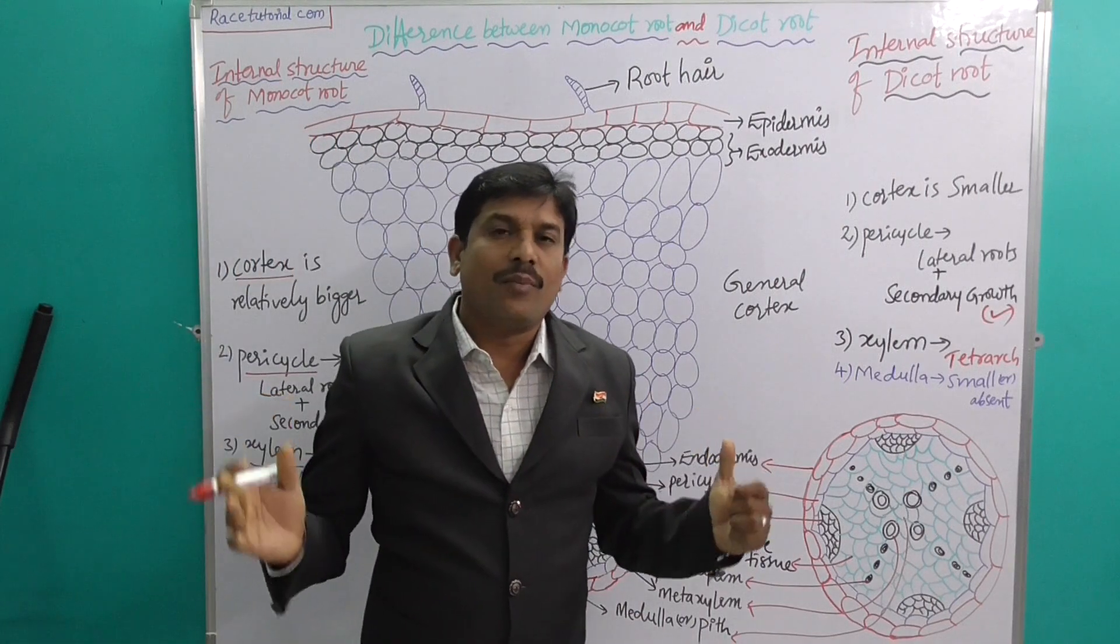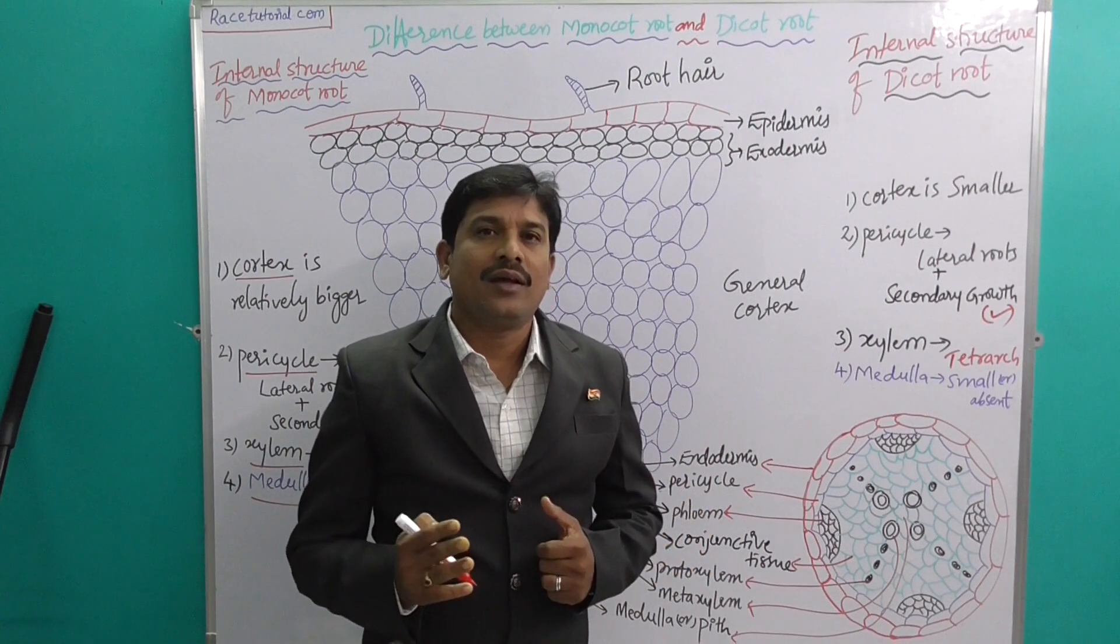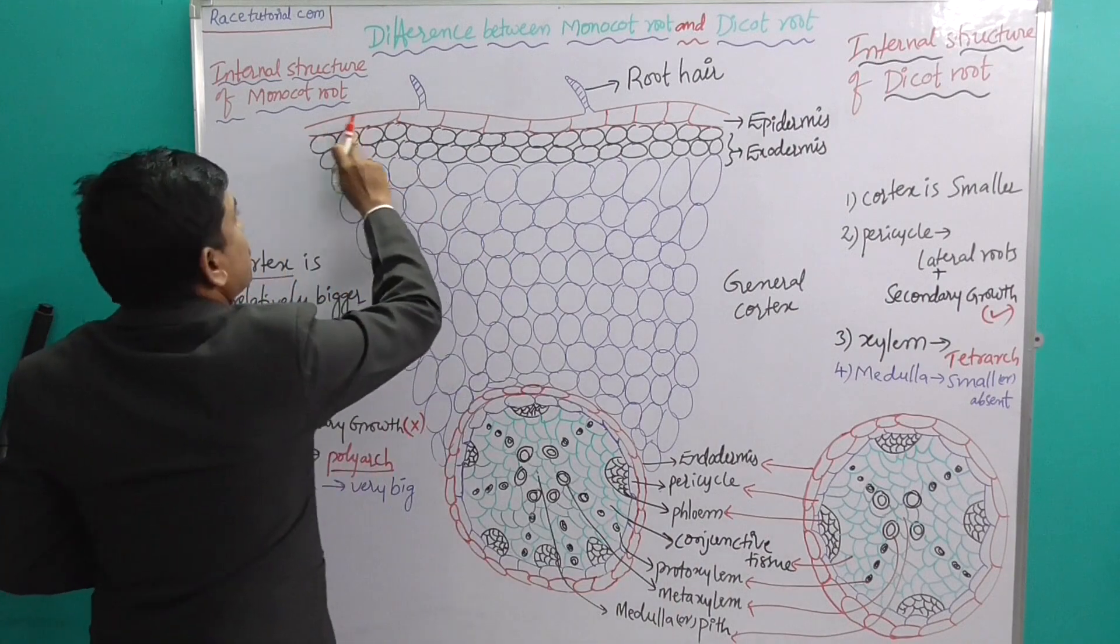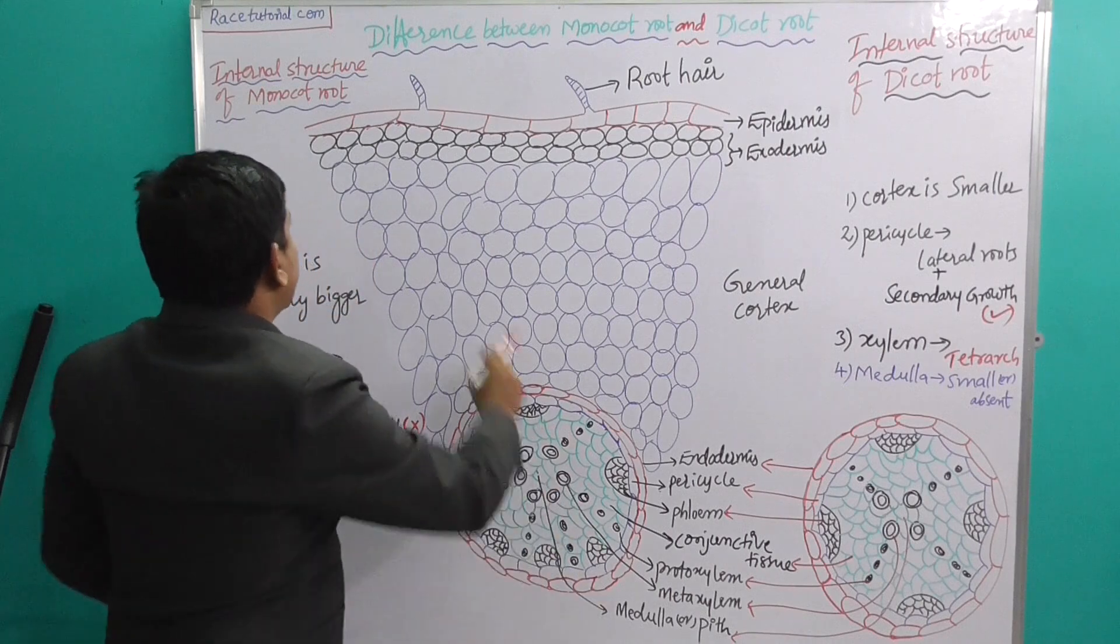In both, there are three parts: epidermis, cortex, and stele. The epidermis part is the same in both - there is no variation.